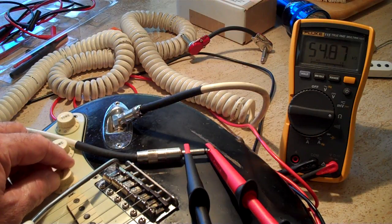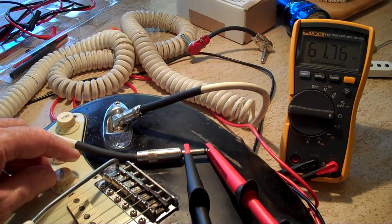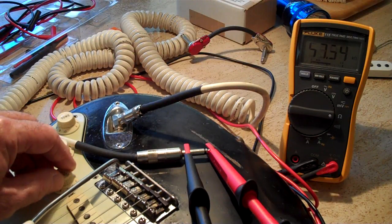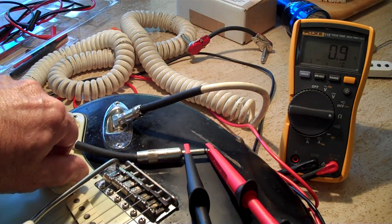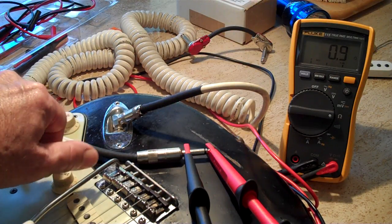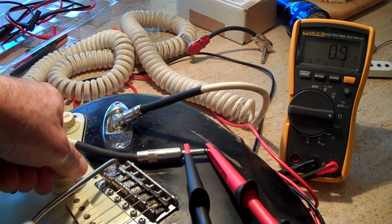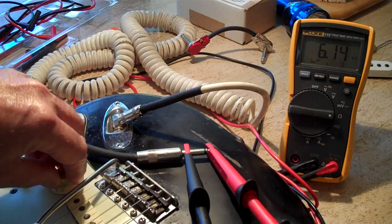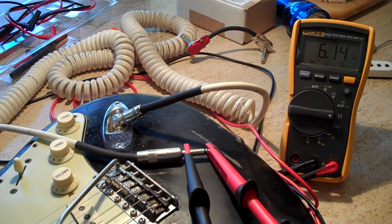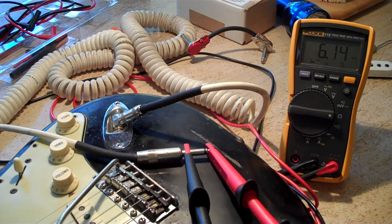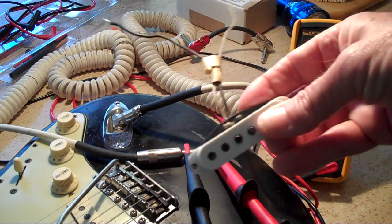Now watch what happens when I turn the volume knob here. All of a sudden the resistance really starts to go wacky. Now it's really high. You would think that would mean the pickup's putting more output out there, but it's not. Now it's all the way off—you see it's reading 0.9 ohms, it's grounded out. So you always want to have your volume all the way up.